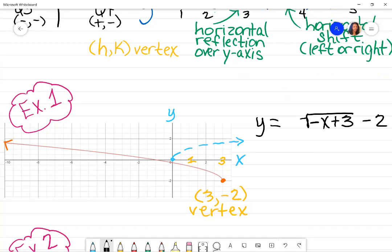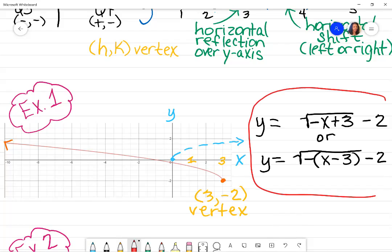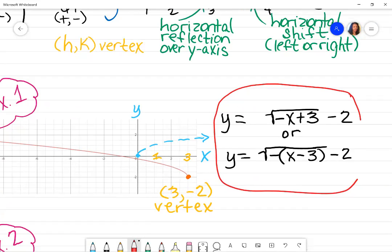So technically, I'm finished. That's how you write an equation. However, some teachers want you to factor out this negative sign. In my class, you can write it either way. If you factor out that negative sign with parentheses, what's left is y equals the square root of negative (x minus 3) minus 2.